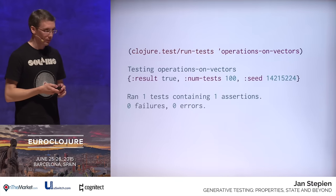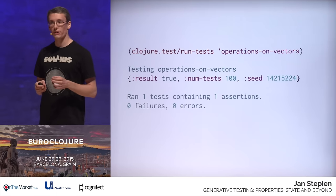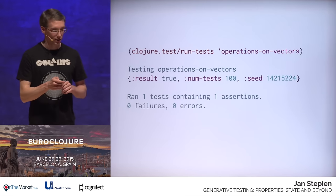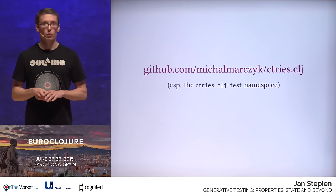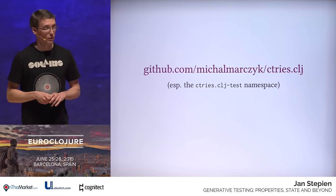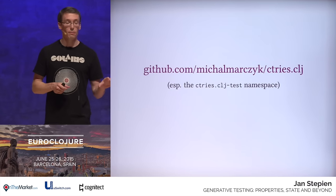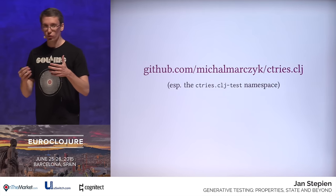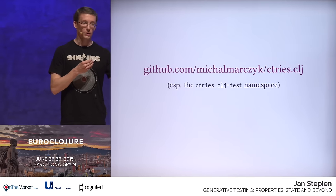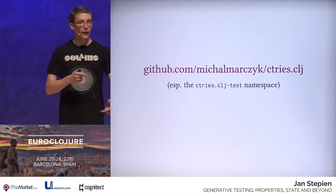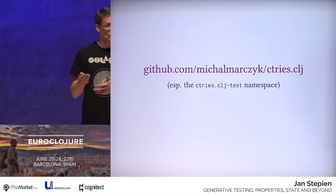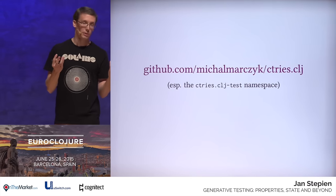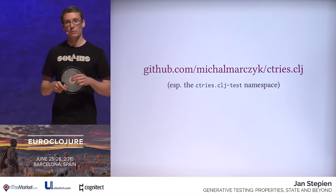If you'd like to check out a more complex scenario of this method of testing, I recommend taking a look at a project mentioned already today — Michał Marczyk's C3s. In the test namespace, Michał uses generative testing to generate sequences of operations which he executes against his implementation of the map and another standard library implementation, and finally compares whether both maps are identical. This way — maybe not guaranteeing, but increasing the likelihood that his implementation is correct.